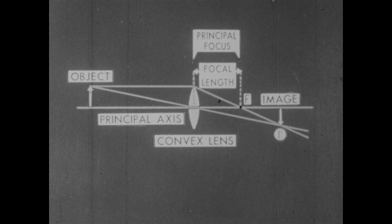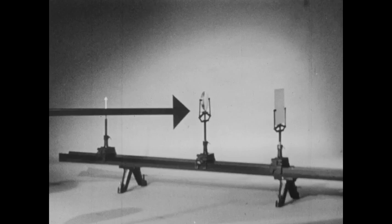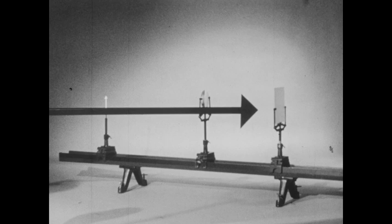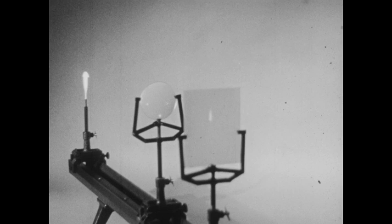Let's see such a lens and the image formation we've been discussing. We have a lighted object, a convex lens, and a screen set in this adjustable optical bench. With the object some distance from the lens, we see the kind of image we'd expect from the diagram we saw: inverted and smaller than the object.